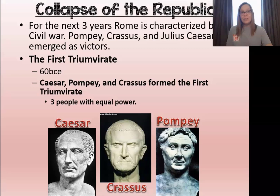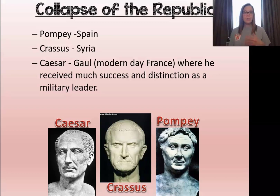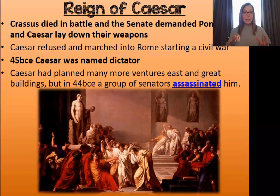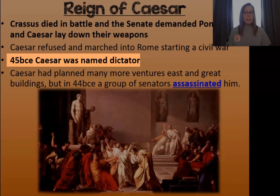When sharing power they split up territories conquered by Rome. Pompey was given control over Spain, Crassus controlled Syria, and Caesar was in control of Gaul — which is now France. Caesar in particular gained a lot of notoriety as a successful military leader. Then Crassus ends up dying in battle, leaving only two leaders. The Senate wants Pompey and Caesar to lay down their weapons, but Caesar refuses. He sees an opportunity to take control, marches into Rome, starts a civil war, and in 45 BCE becomes dictator of Rome.